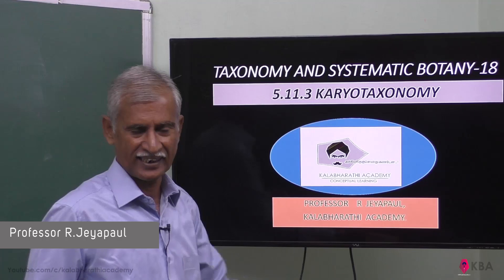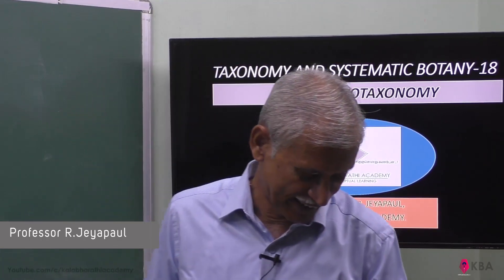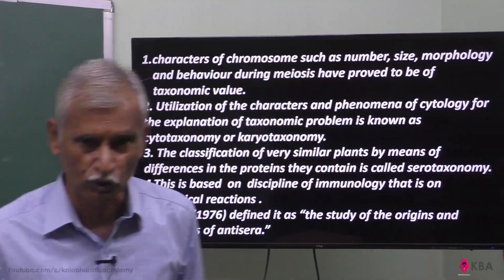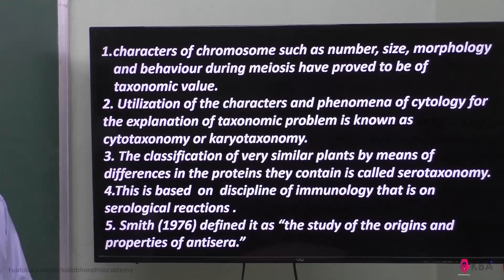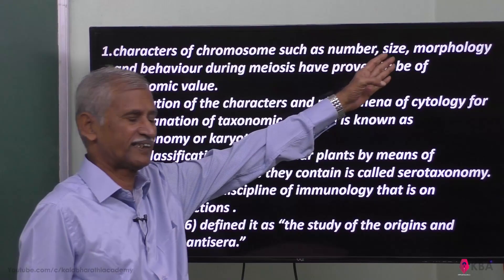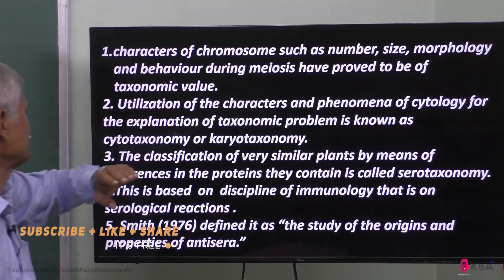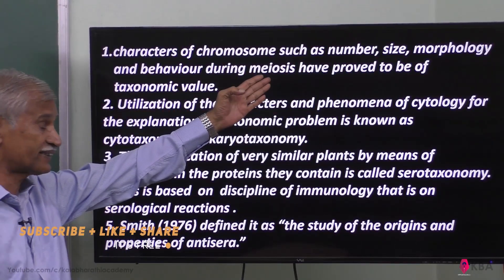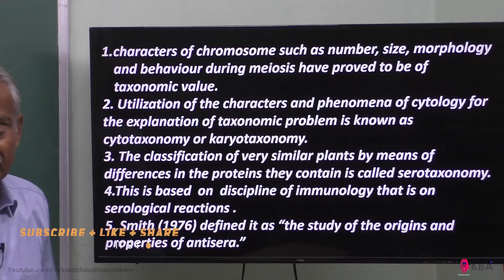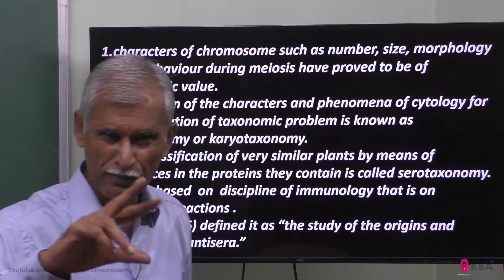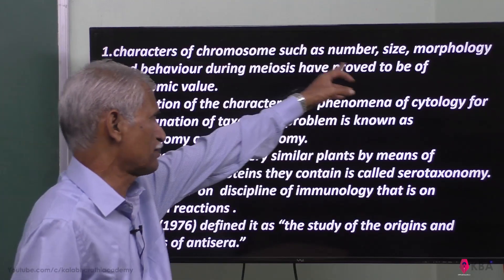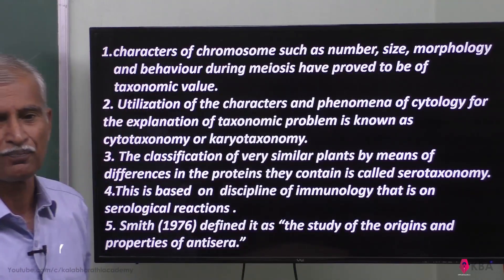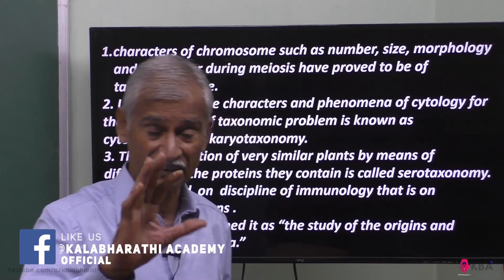The first method is Karyotaxonomy. 'Karya' means nucleus, and it relates to chromosomes. Karyotaxonomy classifies organisms based on the number of chromosomes, their size, morphology, and behavior during meiosis — that is, how chromosomes behave and undergo morphological change during the meiosis stage.